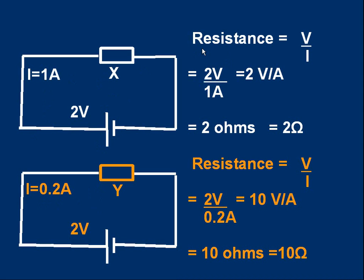Let's see if we can calculate this more rigorously. For the top circuit, we define the resistance as being the voltage across something divided by the current through it. So this object X has got two volts across it, and the current going through it is one amp. So the resistance of X is the voltage across it divided by the current through it. It's two volts per amp. We give this unit a special name—we call it two ohms, and the symbol for ohms is a Greek letter, capital omega. So the resistance of X in the top circuit is two ohms.